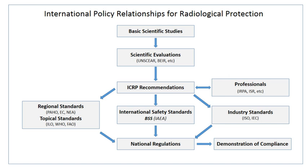The ICRP recognizes planned, emergency, and existing exposure situations. Planned exposure is defined as 'where radiological protection can be planned in advance, before exposures occur, and where the magnitude and extent of the exposures can be reasonably predicted,' such as in occupational exposure situations where personnel work in a known radiation environment. Emergency exposure is defined as 'unexpected situations that may require urgent protective actions,' such as an emergency nuclear event. Existing exposure is defined as 'those that already exist when a decision on control has to be taken,' such as from naturally occurring radioactive materials in the environment.